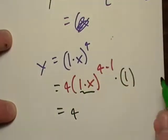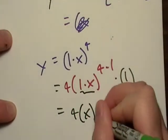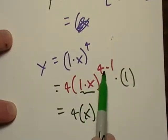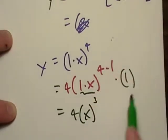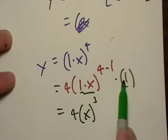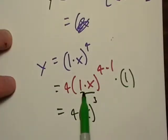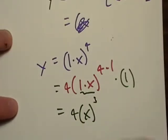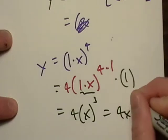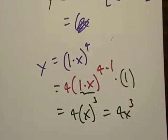4, obviously 1 times x, we can write that a little easy. 4 minus 1 is 3. That's not a problem. And multiplying by 1, well, if we didn't do it on the inside, we're not going to do it on the outside. So we end up with 4x to the third. So that's kind of how you think about it.